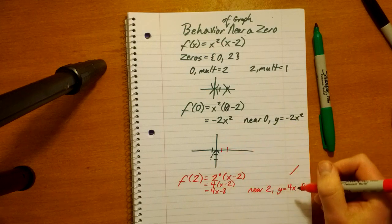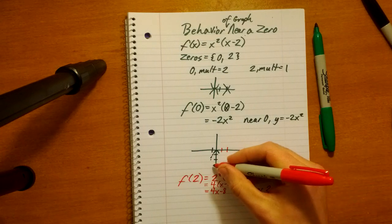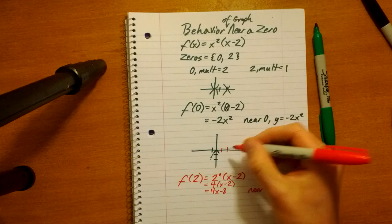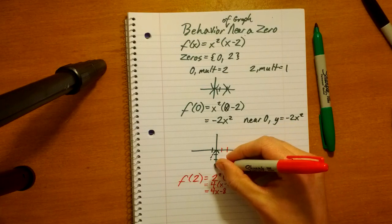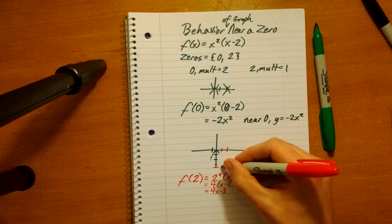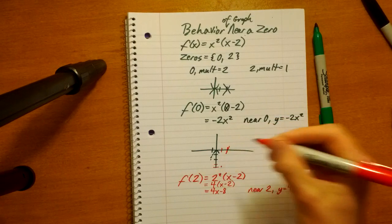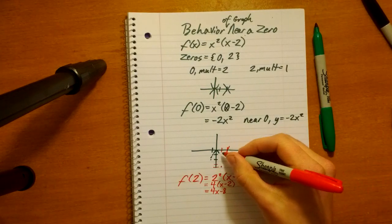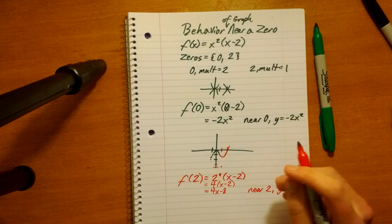The y intercept for this would be negative 8, way down here. But we know that it intersects at two. So, we can just go one, one over and four down. And that will give us just basically what the slope is like right here. And so, we can take that. We take these two points, and we can connect them together with a smooth continuous line.